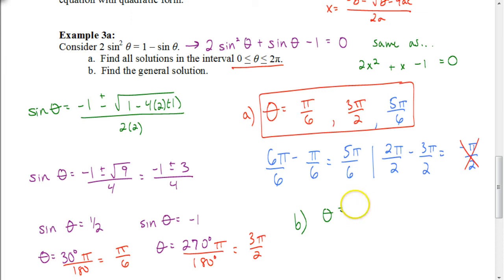So it would be pi over 6 plus 2 pi n. I'd get 3 pi over 2 plus 2 pi n. And our last solution will be 5 pi over 6 plus 2 pi n. So we have three solutions when we find the general solution to that equation.